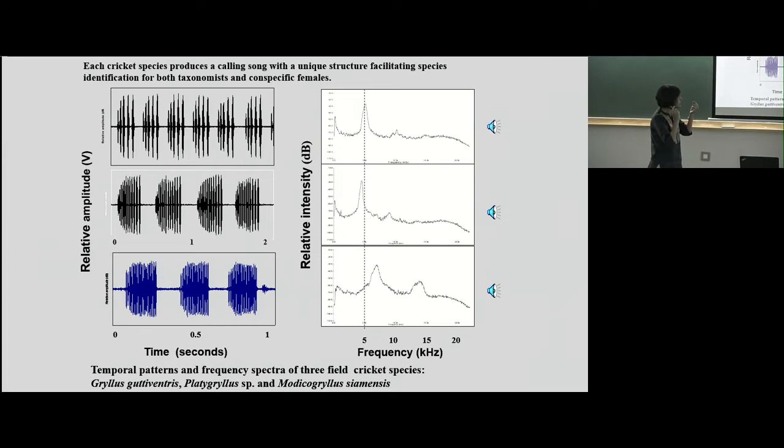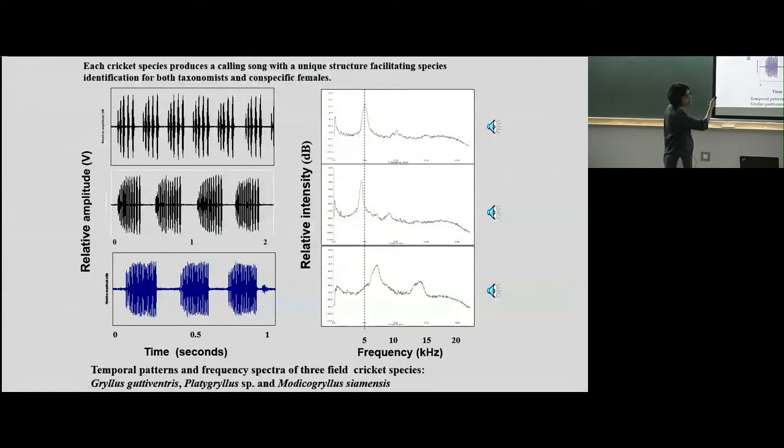The reason these sounds are so discontinuous is because of the way they're produced. Every wing closure produces sound; when they open, it's silent — which is why the songs are pulsed. What you see is the cricket opening and closing its wings repeatedly. Some species don't have chirps — they make long trills — but they don't have that higher-order structure.